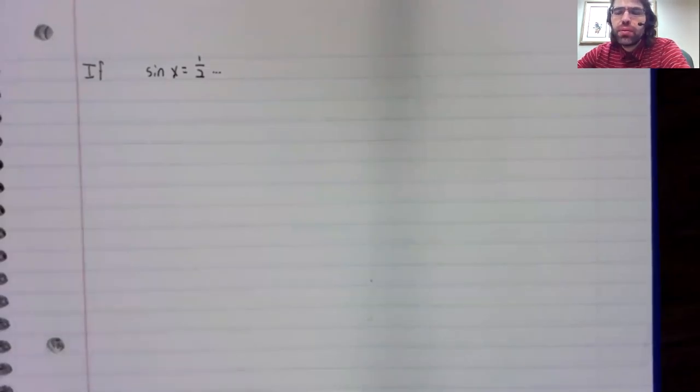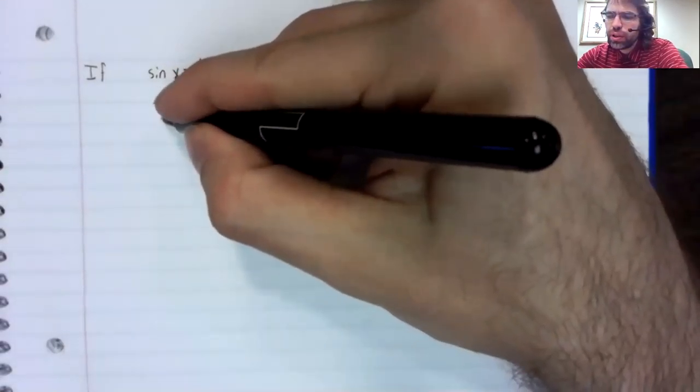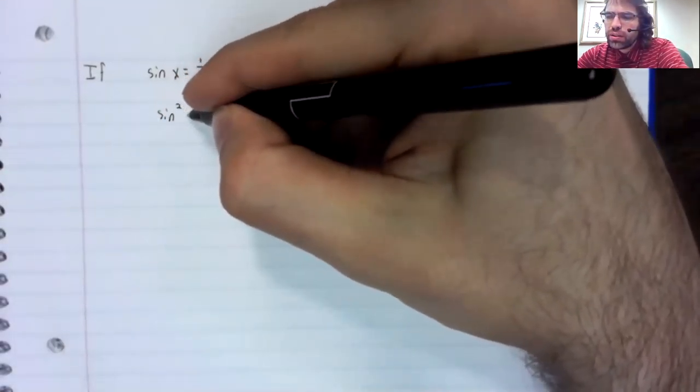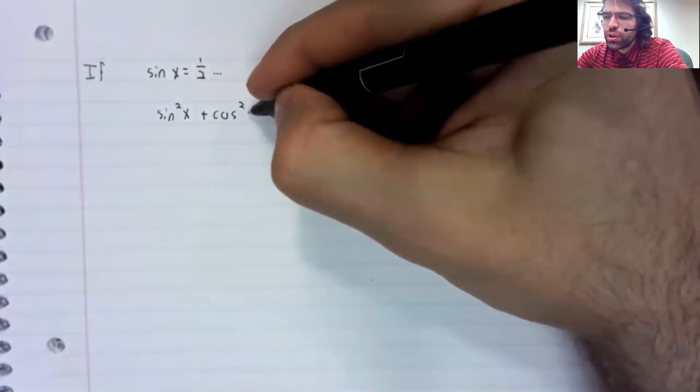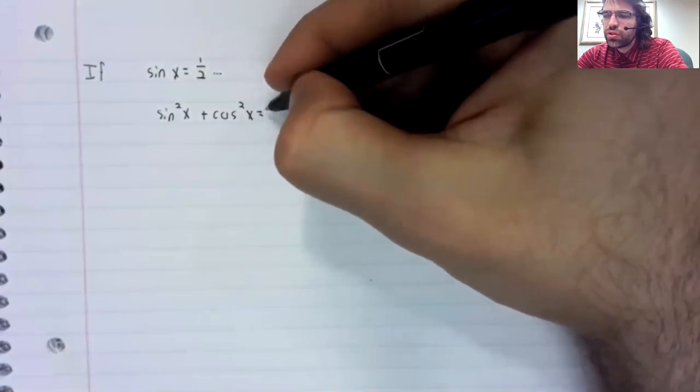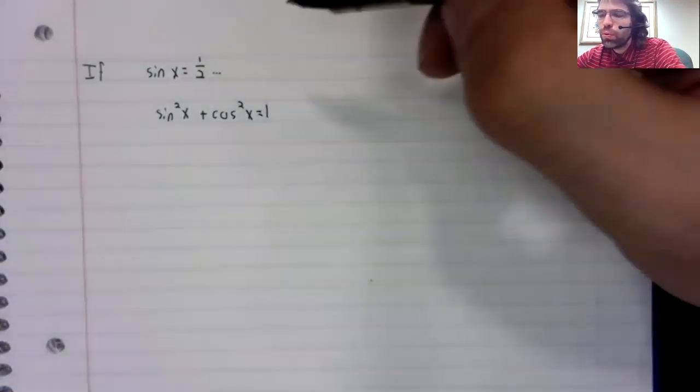What can we say about the cosine of x? Well, we can say that the sine squared plus the cosine squared equals one.